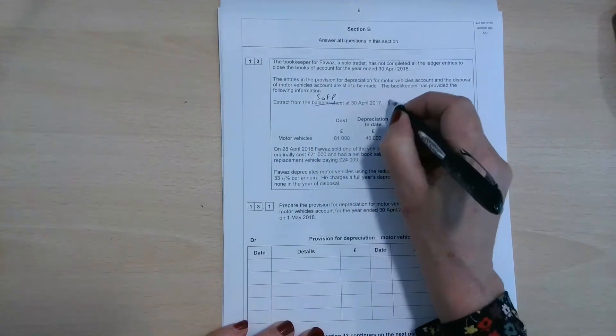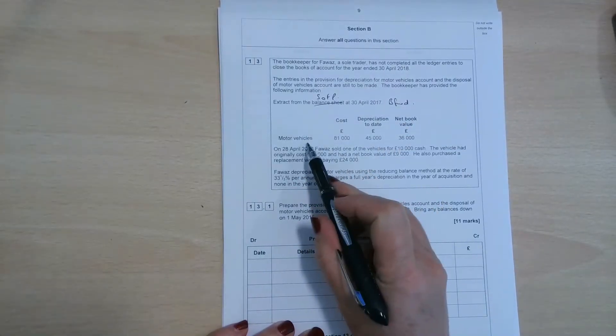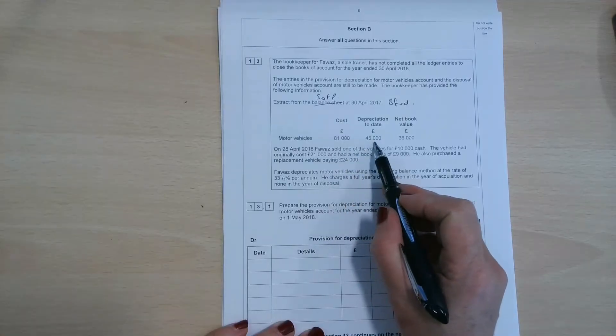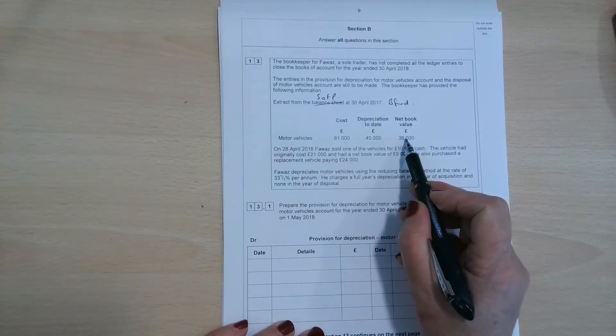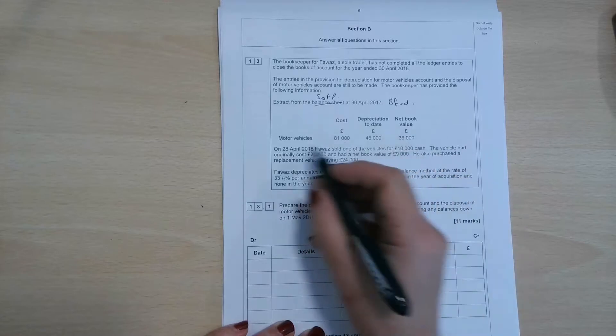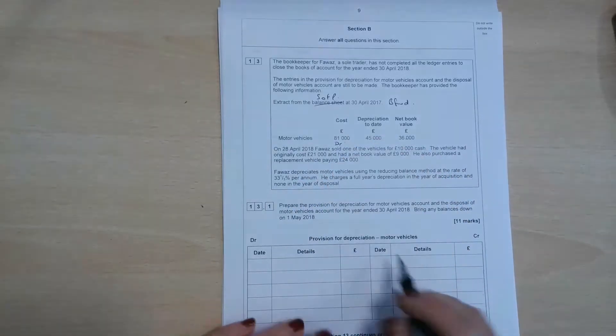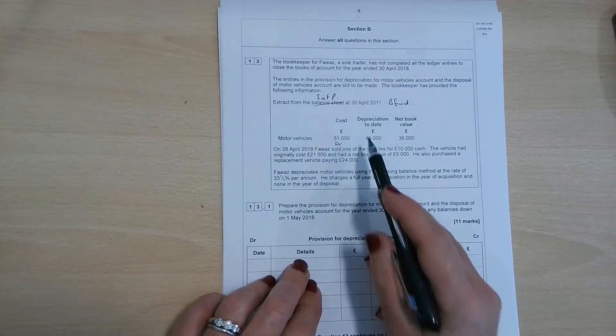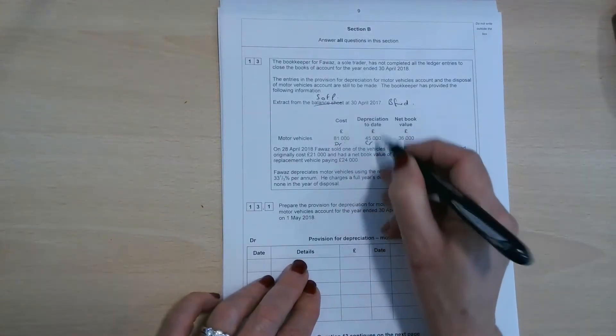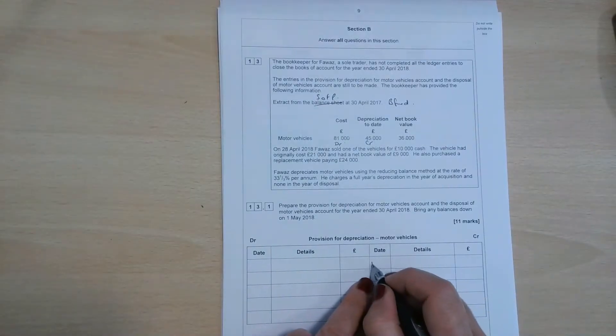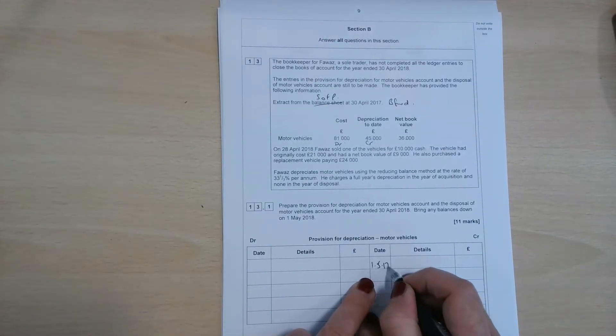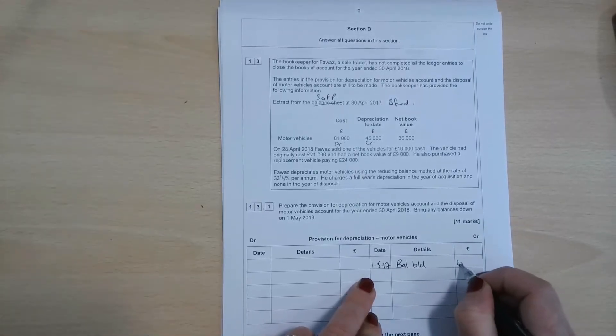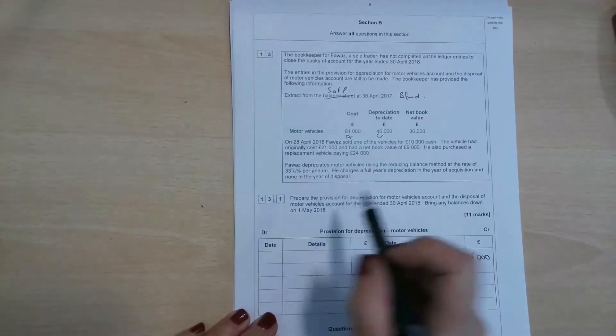at the 30th of April 2017. So these are all the figures that are brought forward from last year. Motor vehicles cost £81,000, depreciation to date was £45,000 and the net book value £36,000. So the motor vehicles at cost would be a debit balance. We're not actually asked to do the motor vehicles at cost account, but we are asked to do the provision for depreciation. So the provision for depreciation, that's all the depreciation to date. So let's pop the opening balance in at the 1st of May 2017. BALBD was £45,000.